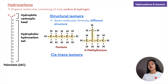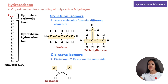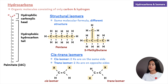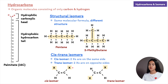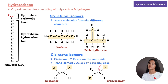The second type is cis-trans isomers, or geometric isomers. In these isomers, the carbons have covalent bonds to the same atoms, but those atoms differ in their spatial arrangement around a double bond. If both substituent groups (X) are on the same side of the double bond, it's called a cis isomer; if they are on opposite sides, it's a trans isomer.